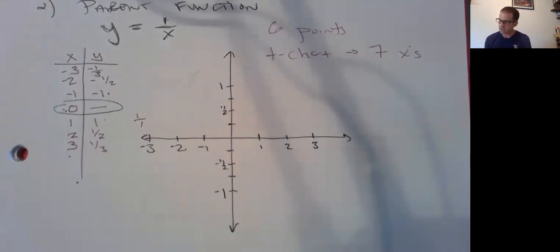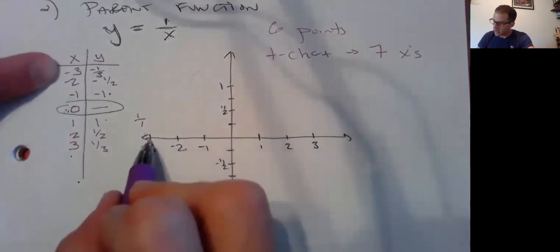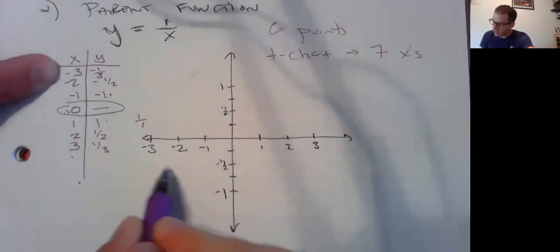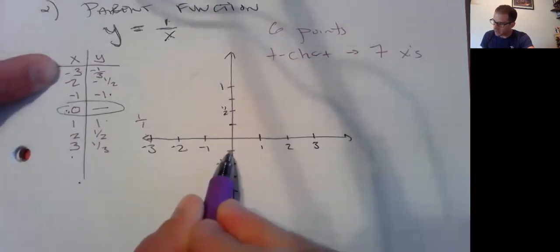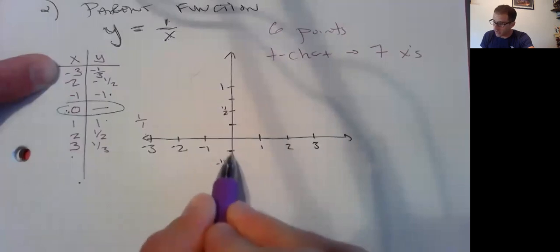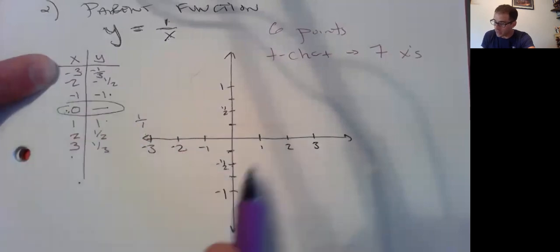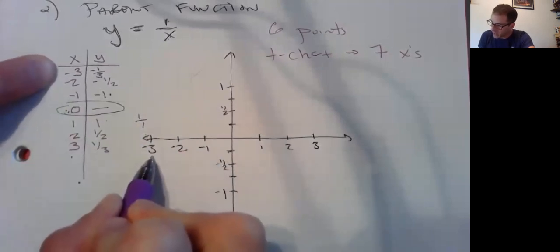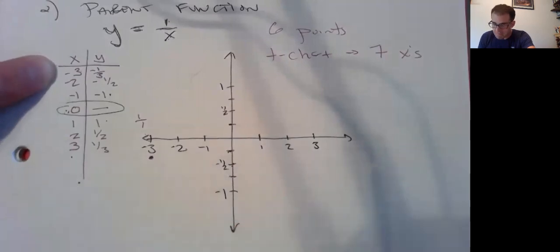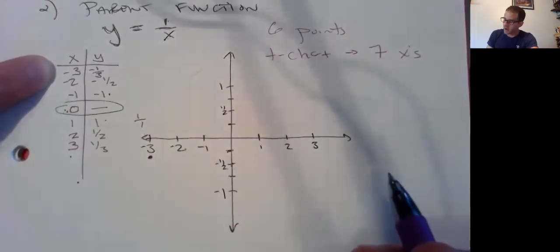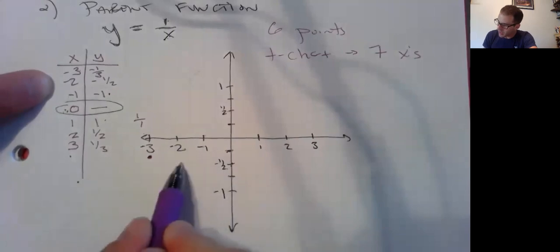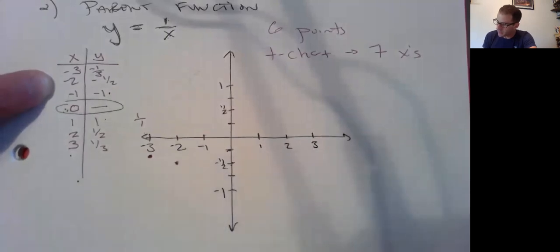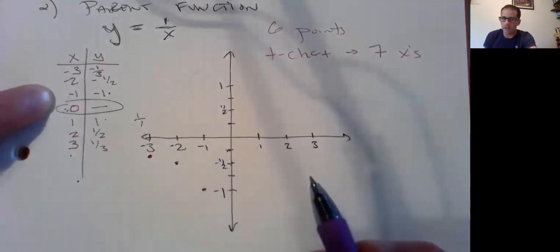All right, let's plot our points. Negative three, negative a third. Well, this is negative a half. If that's negative a quarter, negative a third is in between negative one over four and negative one over two, just like three is in between two and four. So negative three, negative a third. I'll estimate right there. But negative two, negative one half is actually fairly simple because it's on the crosshairs, and so is negative one, negative one. Don't connect the dots yet.